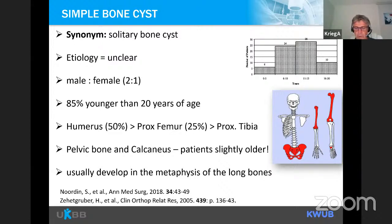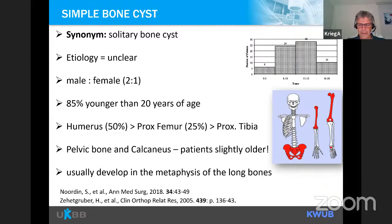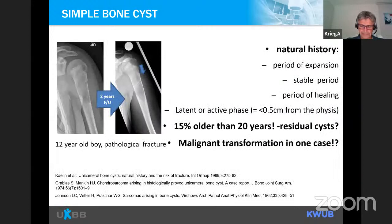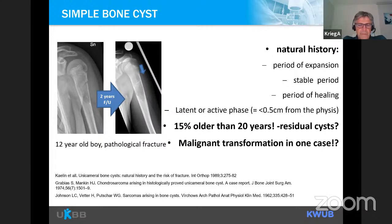Bone cysts are more commonly found in boys and usually develop in the metaphysis of long bones. They may rarely cross the growth plate, extending into the epiphysis. Cysts crossing the growth plate may induce growth disorders, resulting in limb length discrepancy or axial deviation — either spontaneously or as a complication of treatment. The natural history is that the cyst develops in the metaphysis, then with growth migrates toward the diaphysis, and usually ends up filled and ossified.